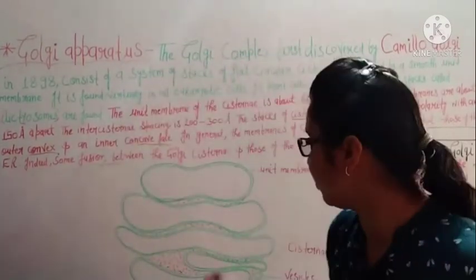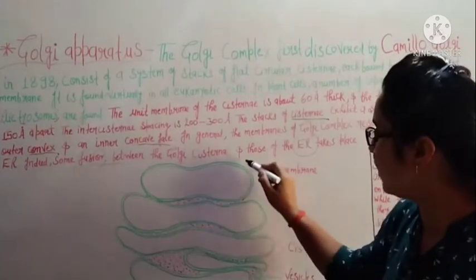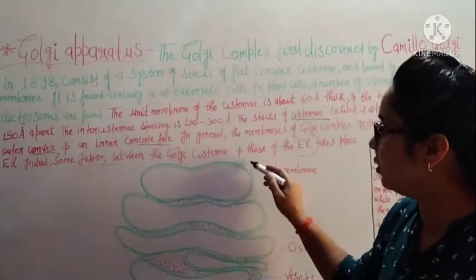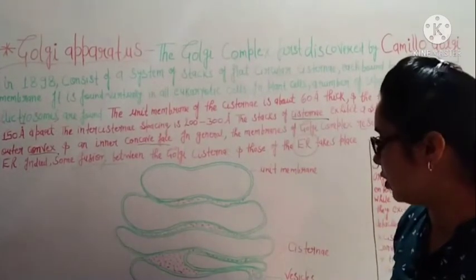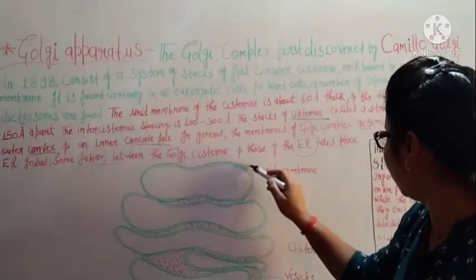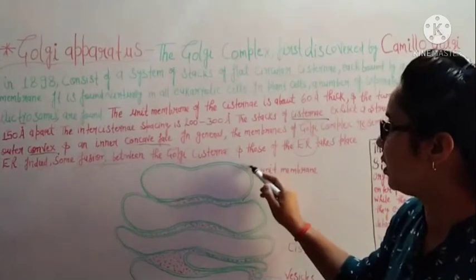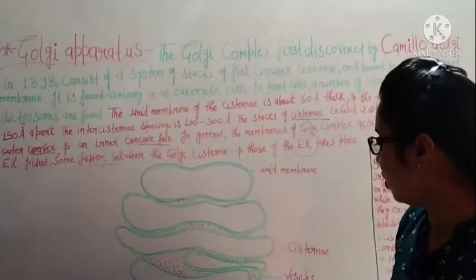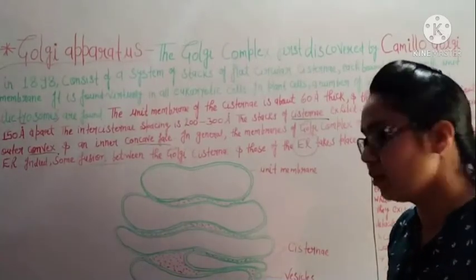The trans phase is where substances exit in the form of smaller detached vesicles. The trans phase is also called the concave phase or the maturing face. So the cis phase is convex and the trans phase is concave.